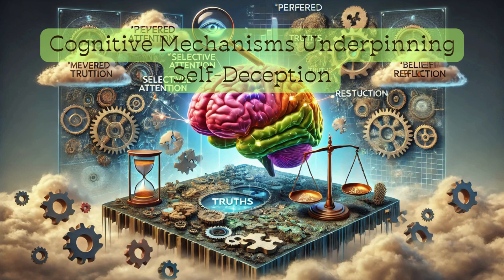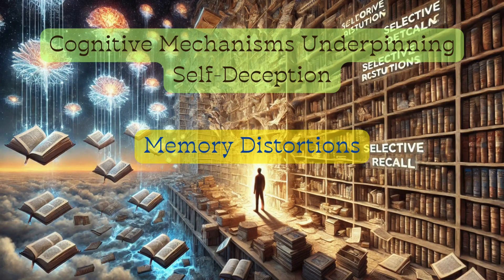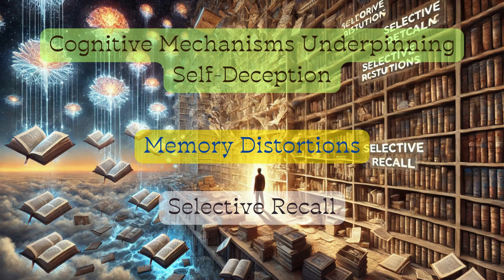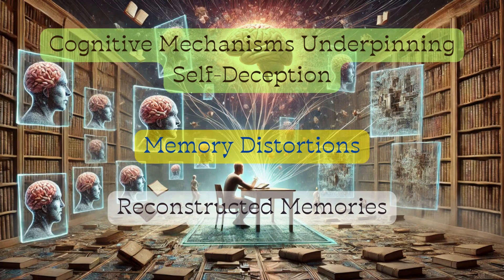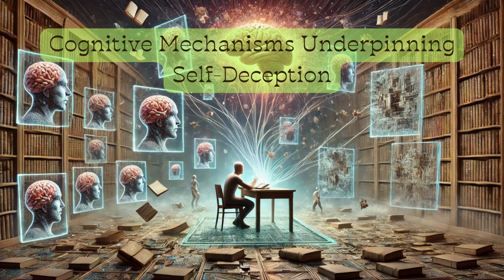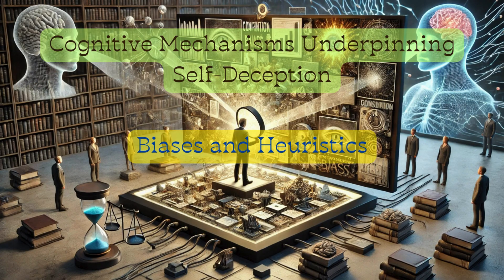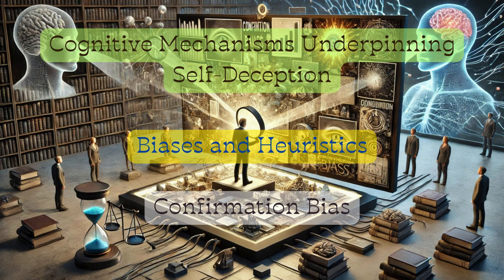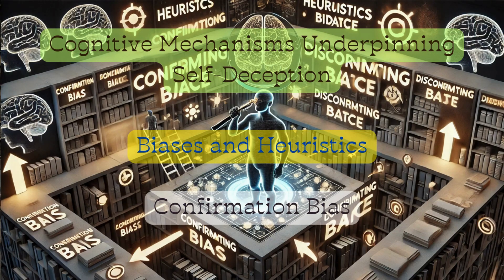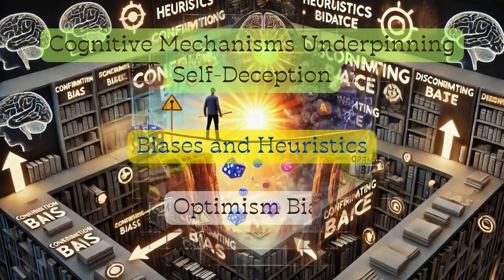Cognitive mechanisms underpinning self-deception include memory distortions. Selective recall involves remembering information that aligns with one's self-concept while forgetting contradictory evidence. Reconstructed memories involve altering past memories to fit current beliefs.